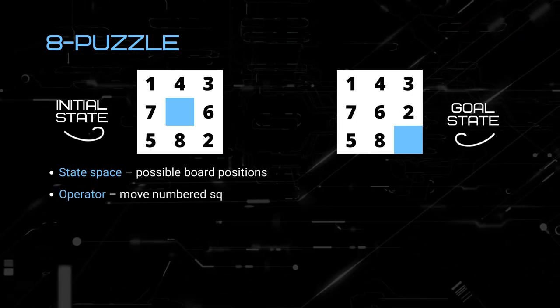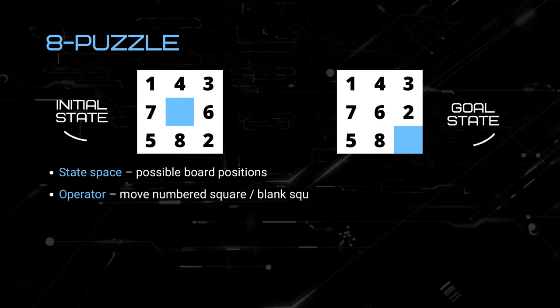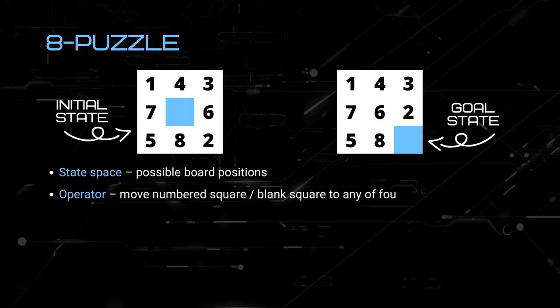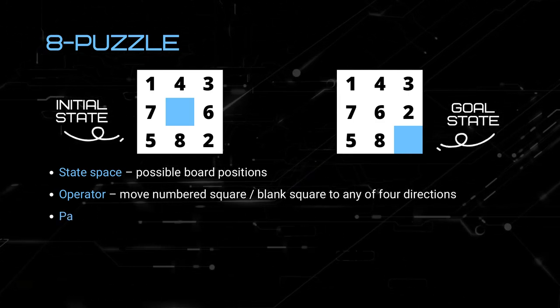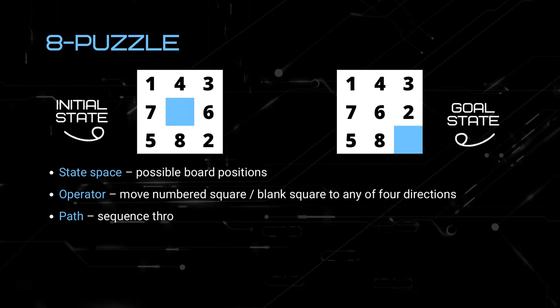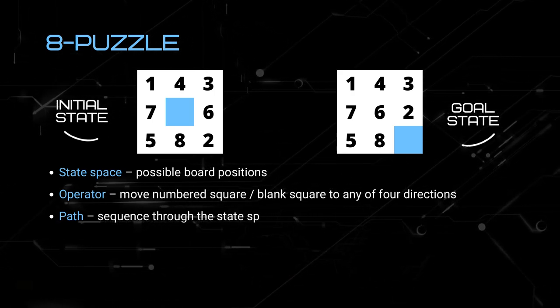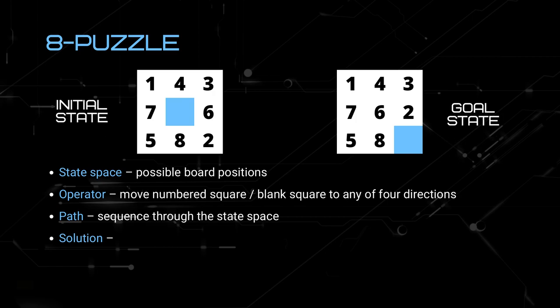The operator would be to move either the numbered square or the blank square to any of the four directions. The path would be the sequence through the state-space, while the solution would be the path from the initial state to the goal state.